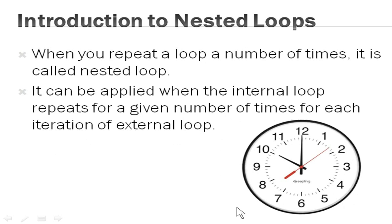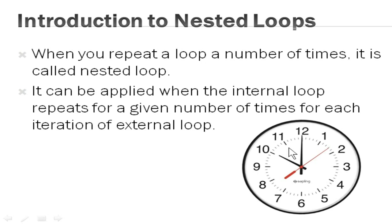You can see here an example of a wall clock where you have three pins: hour hand, minute hand, and second hand. The second hand will go one full rotation so that the minute hand will move one point. Similarly, when the minute hand goes one full rotation, it moves the hour hand to one full hour. The same working will be for the nested loop — the internal loop will execute one full set of iterations so that it will update the outer loop.